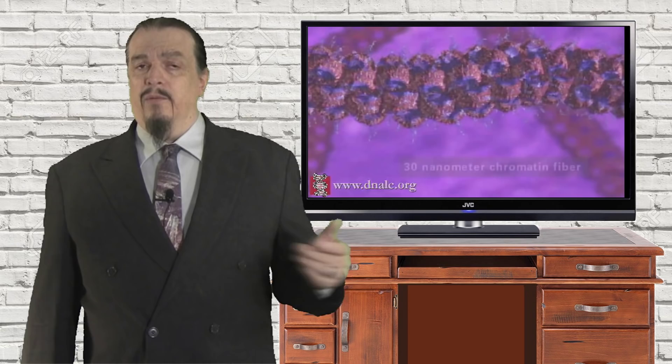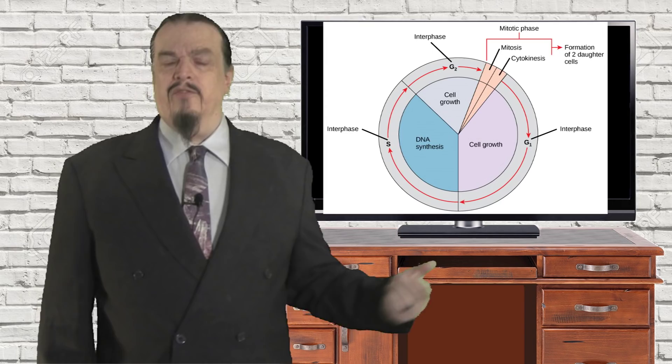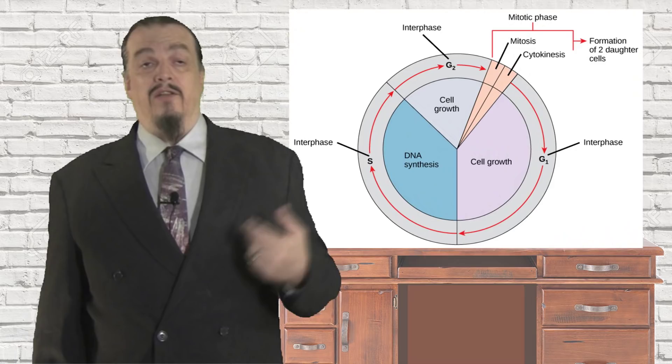Before cells actually divide, they spend most of their time in a cellular cycle called interphase, or the growing phase. During interphase, they are performing their normal function of making a copy of DNA in preparation for the cell to divide. Most cells of adult mammals spend 20 hours in the interphase, which is divided into three parts: G1, S, and G2 phases.